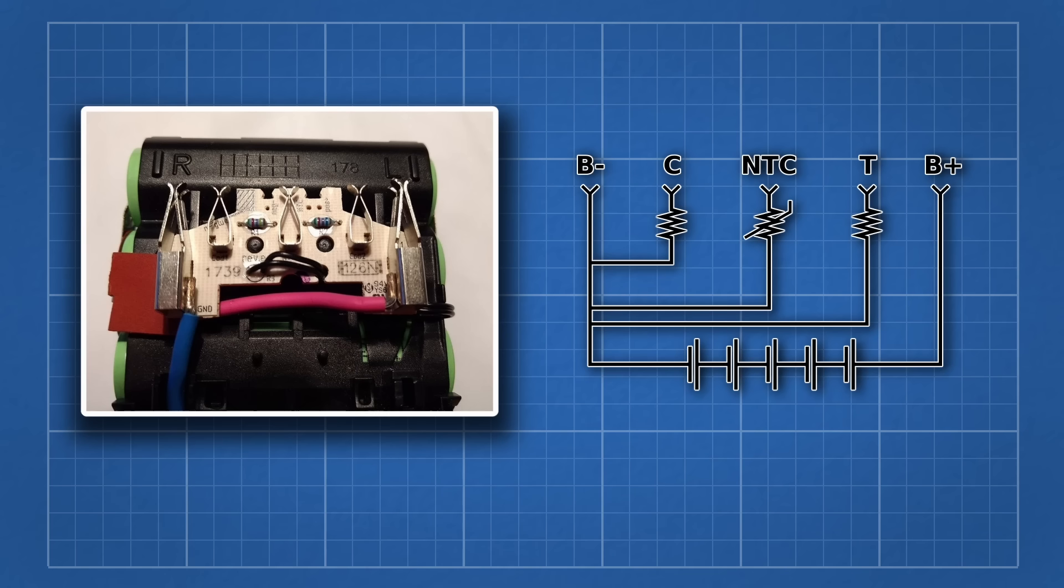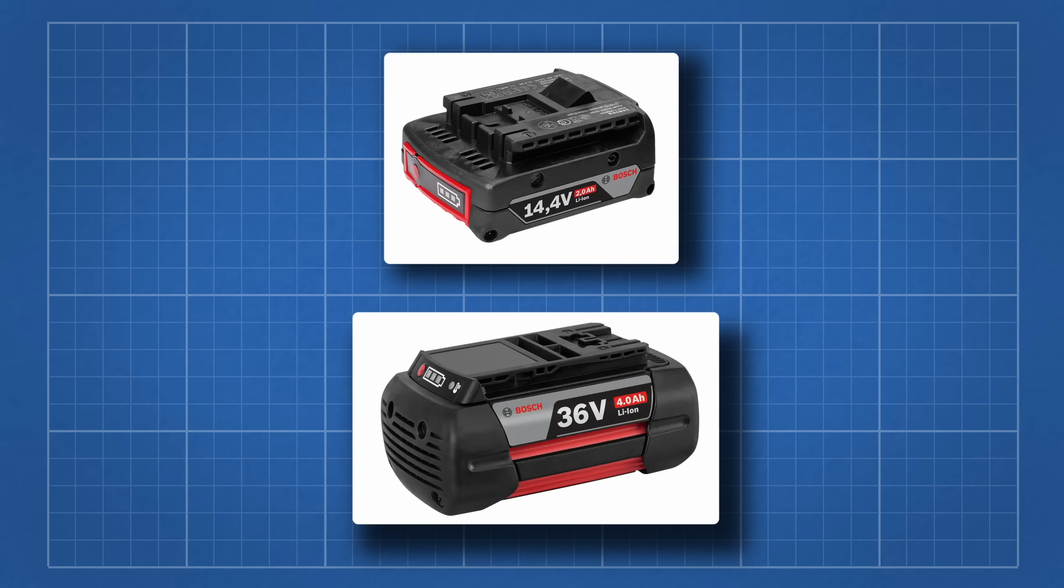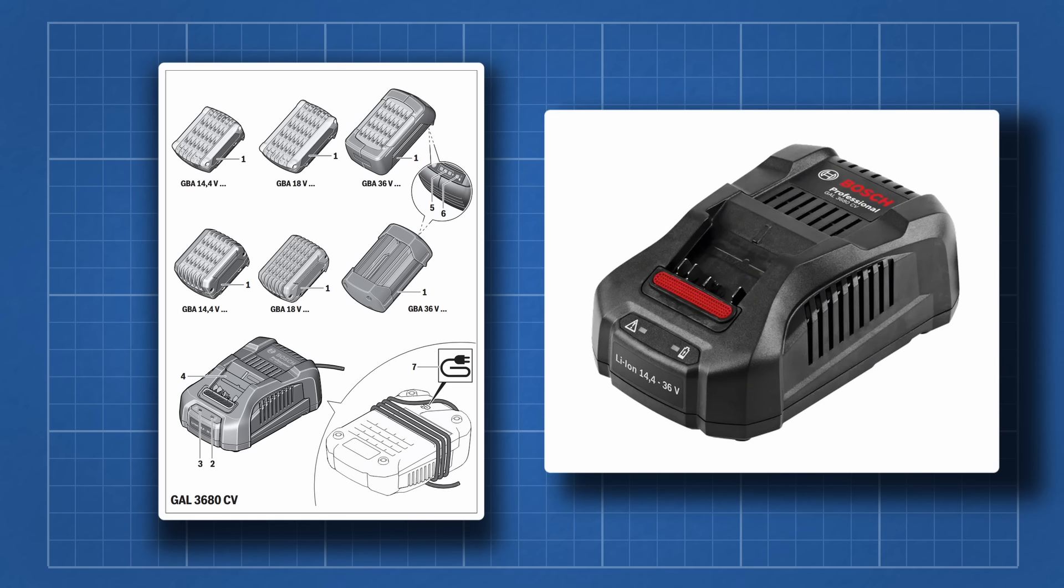Both pins are only checked at startup and can be disconnected without stopping the tool or the charger. They are simply for battery identification, as Bosch also has 14.4V and 36V systems. These other two systems are physically compatible and some chargers can charge all three systems.